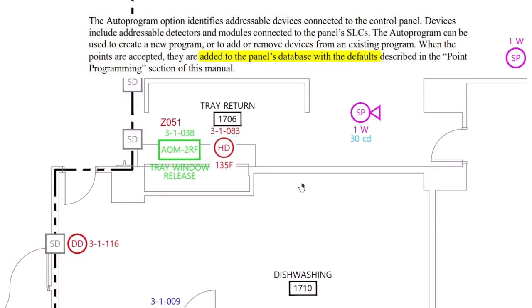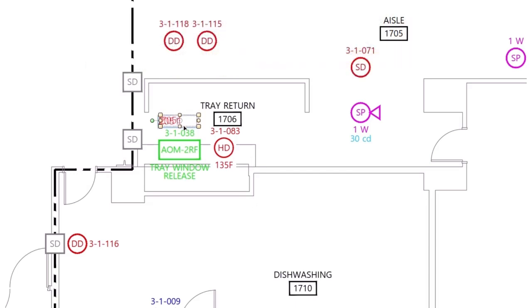What's going to happen if it's a GameWell FCI system? It's going to lose these group assignments linking this detector to that control module. And if it's a Notifier system, it'll clear out the zone and give it a default zone, in addition to clearing the description of the device. So that will not work to alleviate that problem.